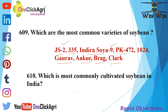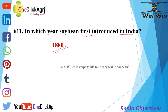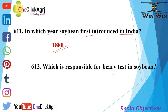The most commonly cultivated soybean in India is yellow color soybean. Soybean was first introduced in India in 1880. Which compound is responsible for beany taste in soybean? That is a sulfur compound.